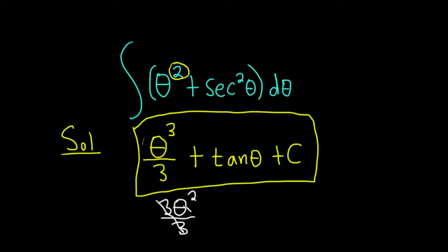These cancel, giving us theta squared, which is good. The derivative of tangent is secant squared, and the derivative of C is 0 because it's a constant. So this is theta squared plus secant squared theta, which is exactly what we have in the integrand.